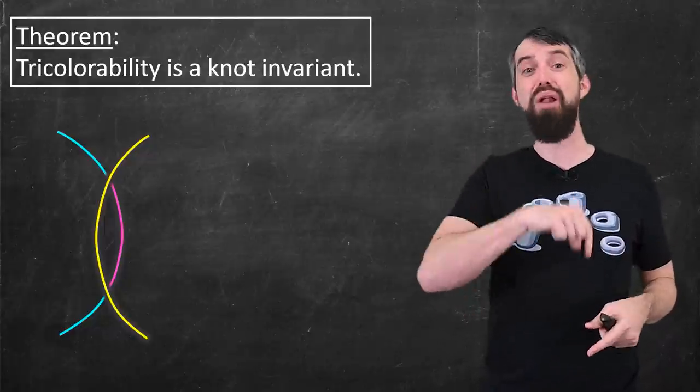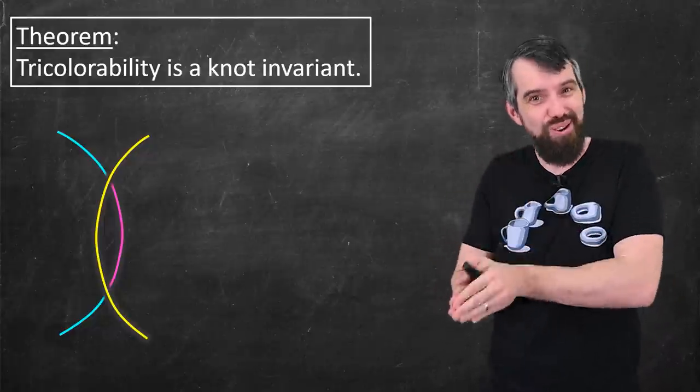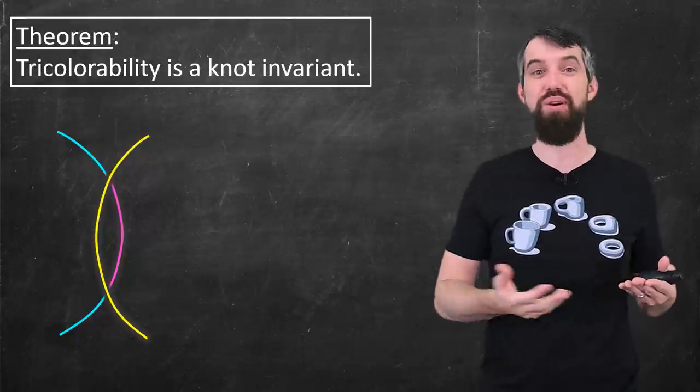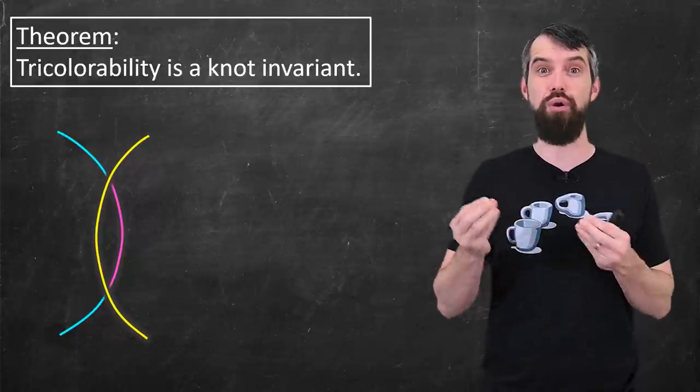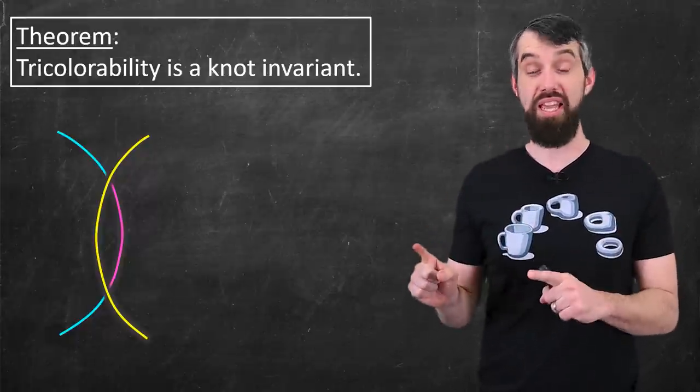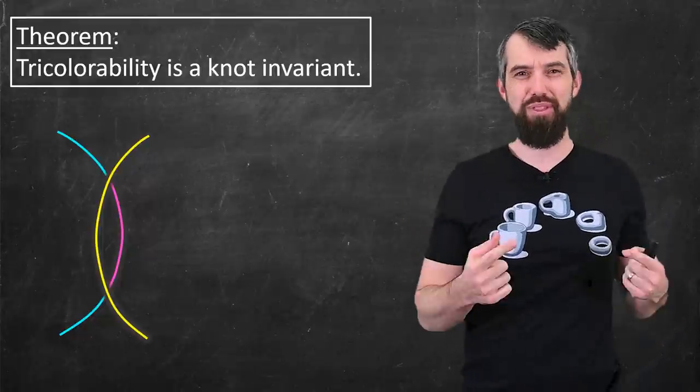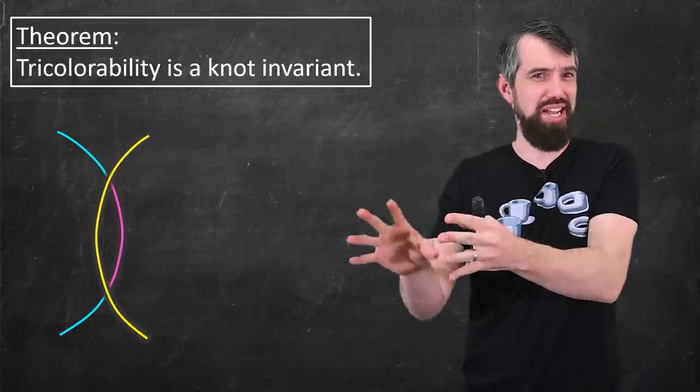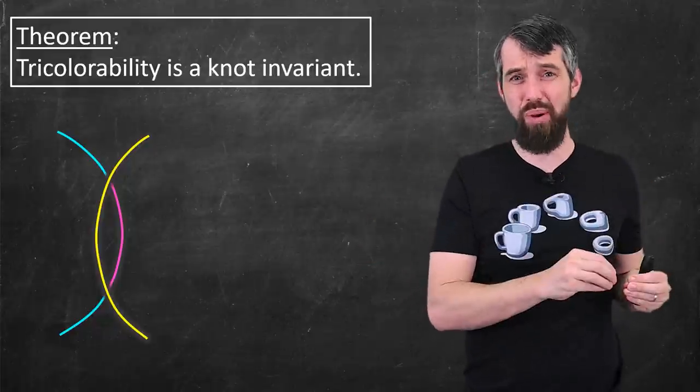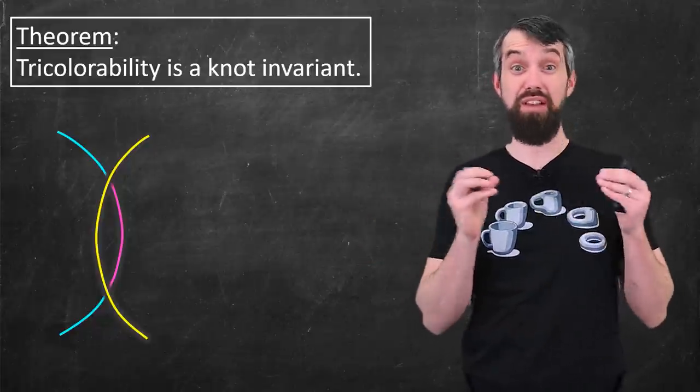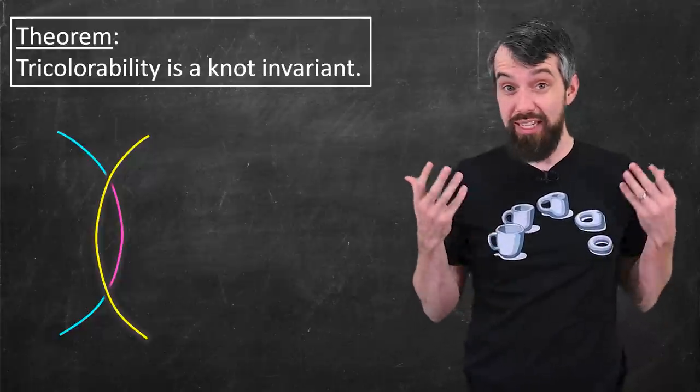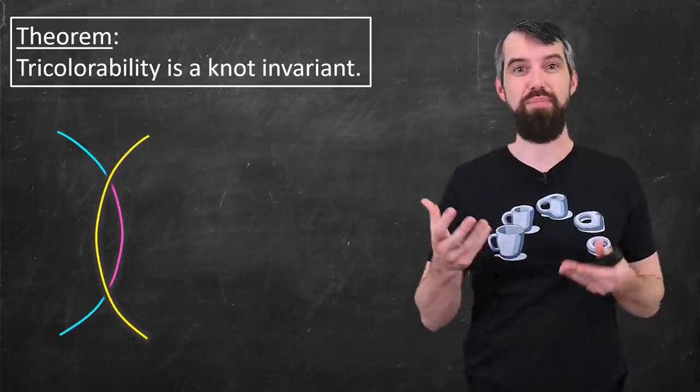That is what I mean by it being a knot invariant. And I would encourage you to argue maybe down in the comments why the first and third Reidemeister move also is going to be invariant under this tricolorability. Now, tricolorability is great, but it's kind of limited. There's tons of knots that are tricolorable, there's tons of knots that aren't tricolorable, and so this first invariant is not particularly sensitive between different types of knots.